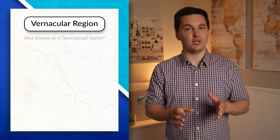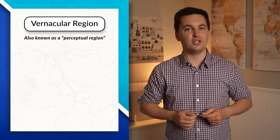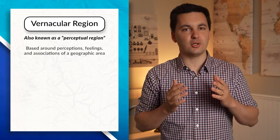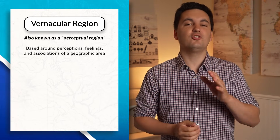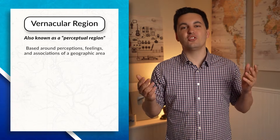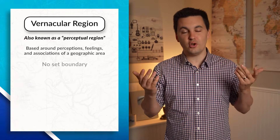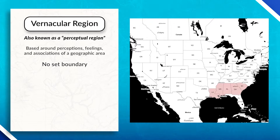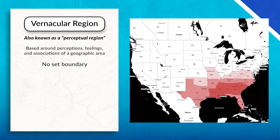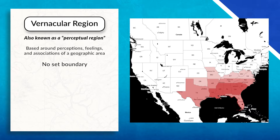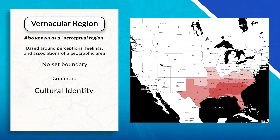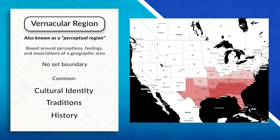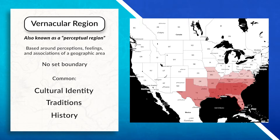Lastly, we have a vernacular region, also known as a perceptual region. This region exists in the minds of the people and is based around their perceptions, feelings, and associations of a geographic area. These regions are hard to define since there is no set boundary. For example, what states are part of the American South? Generally speaking, people think of the South in the United States as having a common cultural identity, shared traditions, and also shared history, but the states that are included in the South vary depending on who you talk to.